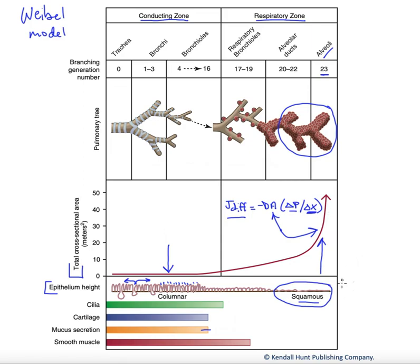This minimizes our diffusional distance. So we can point to our delta X here. We want this delta X to be small, a short distance across these cells. That will maximize our rate of diffusion over here.